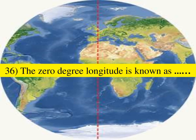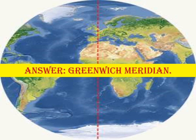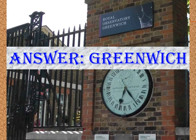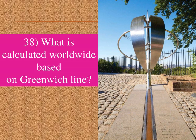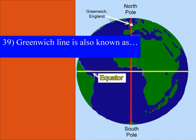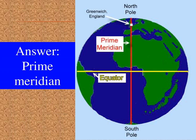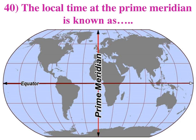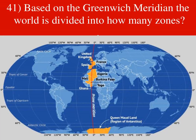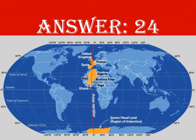The 0-degree longitude is known as the Greenwich Meridian. Where is the Royal British Observatory situated? Answer: Greenwich. What is calculated worldwide based on the Greenwich line? Answer: Time. The Greenwich Line is also known as the Prime Meridian. The local time at the Prime Meridian is known as Greenwich Mean Time. Based on Greenwich Mean Time, the world is divided into how many zones? Answer: 24 zones.